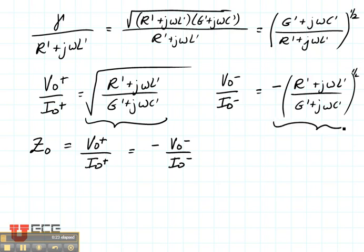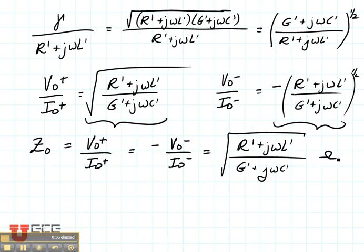which is this same value right there. So the characteristic impedance is R prime plus J omega L prime over G prime plus J omega C prime, square rooted. It has units of ohms.